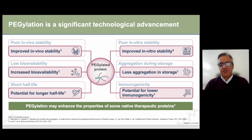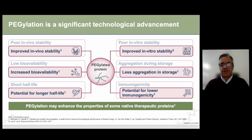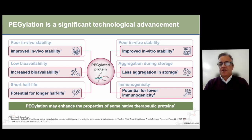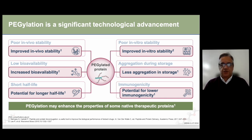Pegylation addresses key limitations by improving stability, reducing aggregation, and enhancing half-life. This is particularly important since most proteins — except antibodies — have a short half-life, making the potential to increase pharmacokinetics very high with pegylation. Stability is also improved with pegylation, with the added potential for lowering immunogenicity, making it a cornerstone in modern drug design.